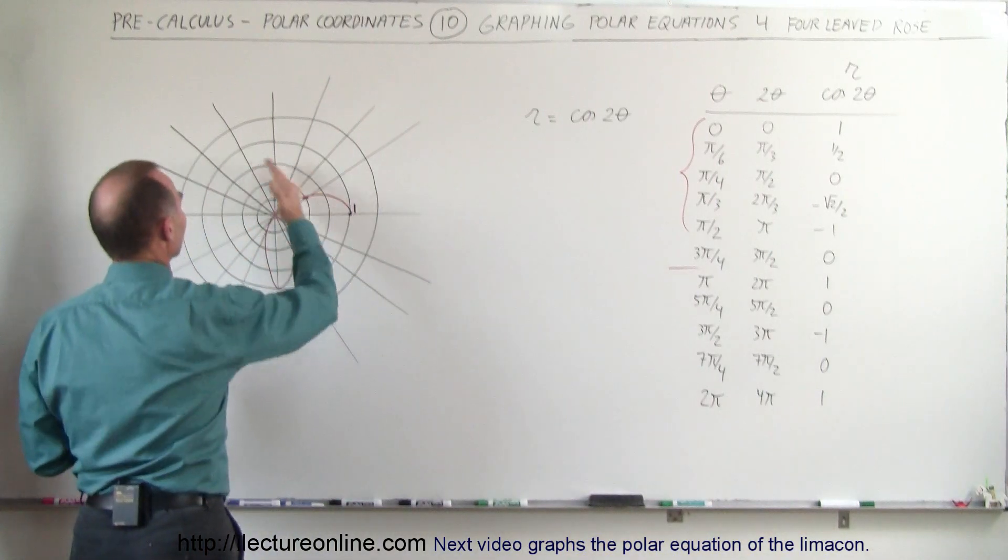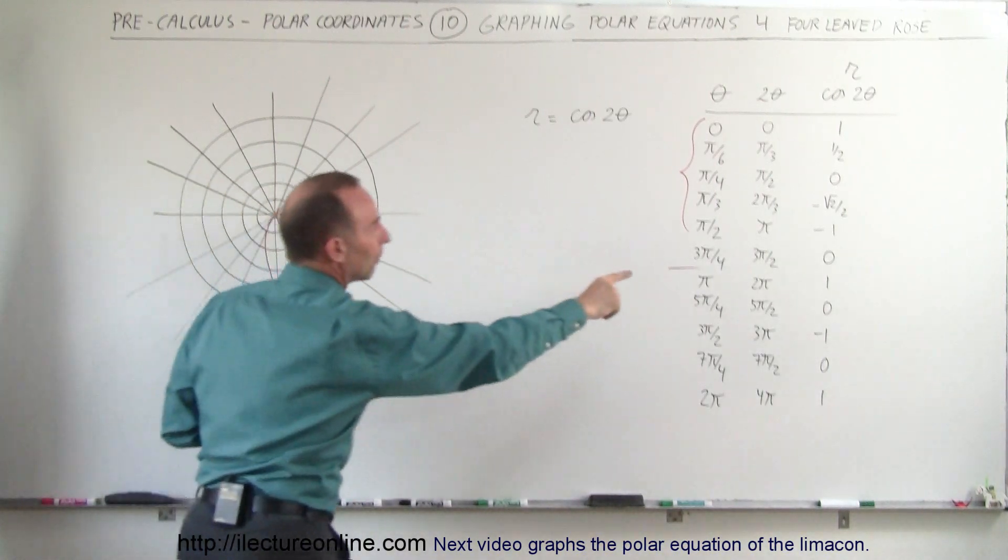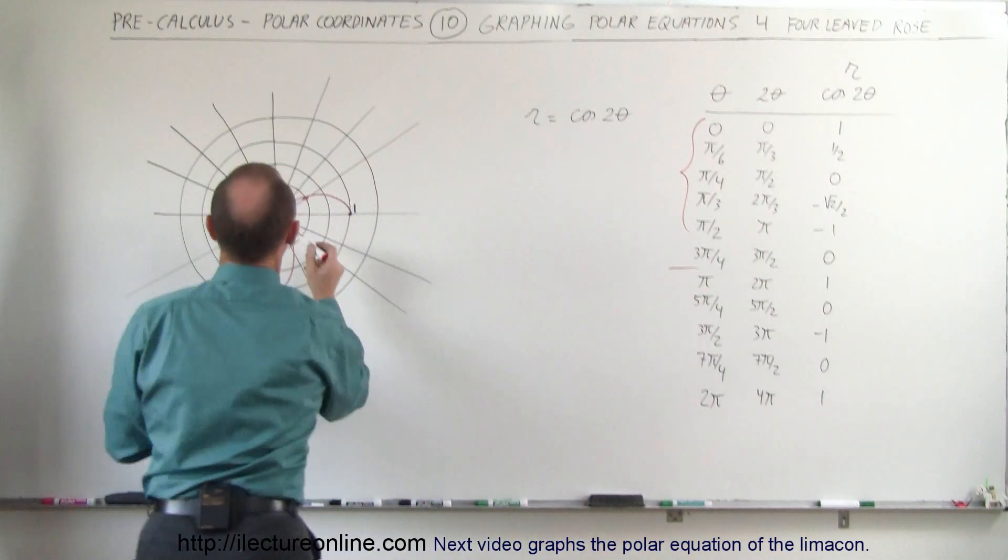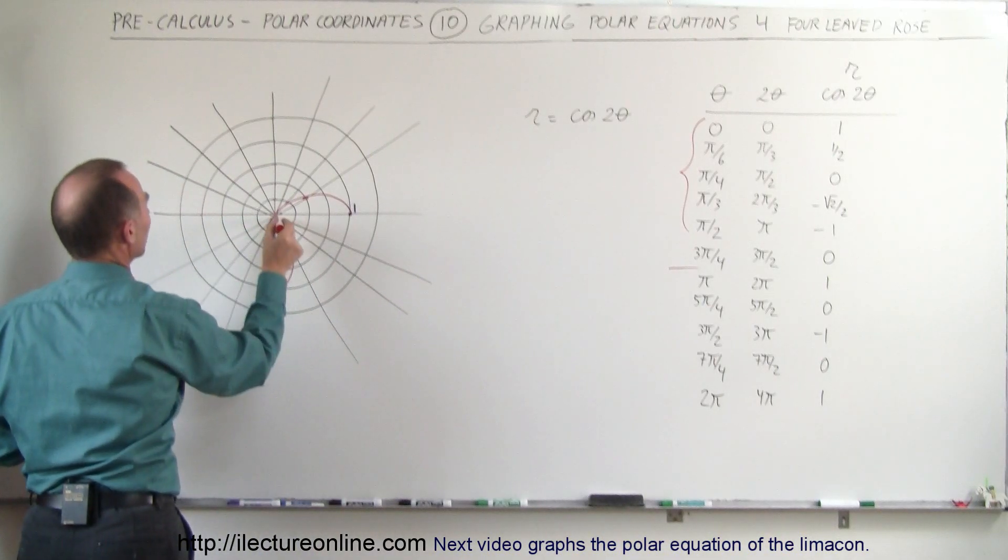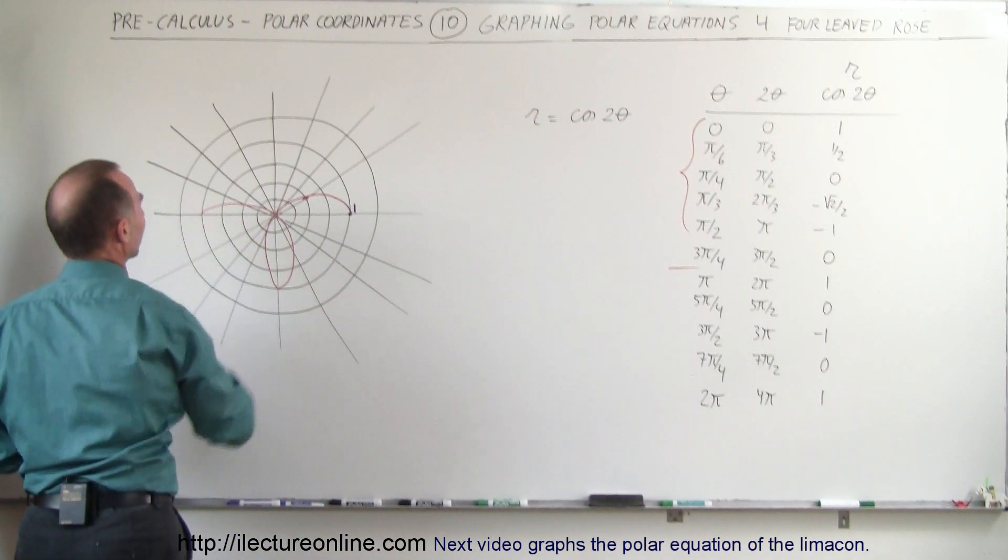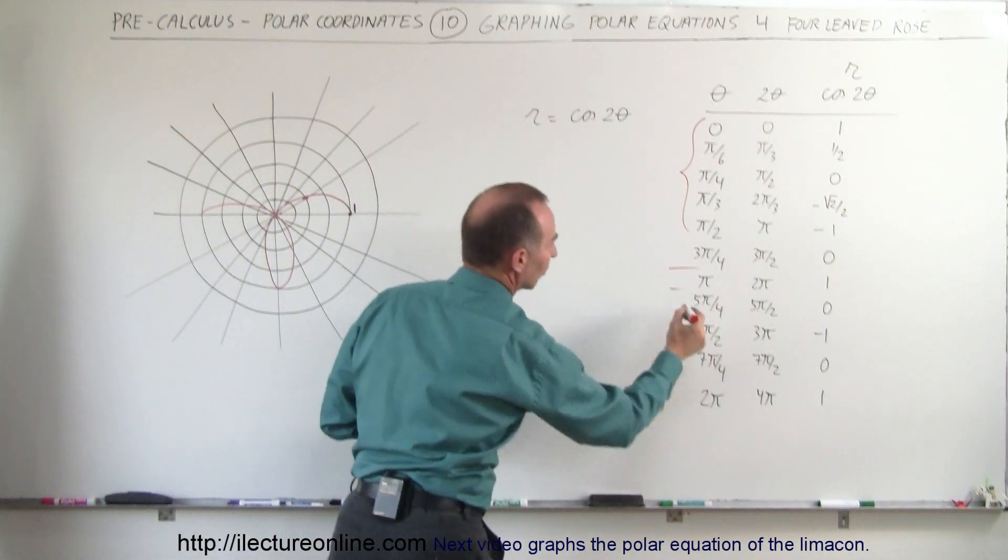At pi, when we're facing in this direction, now we are back to 1. So at pi, we're back to 1 right here, so that means this curve continues on like that. Okay, so now we're down to this location.